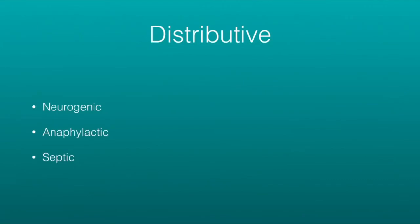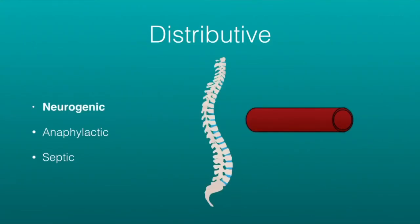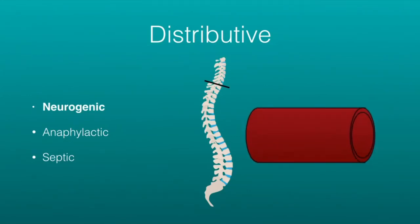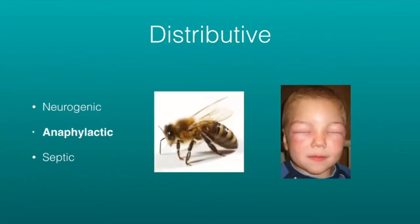With distributive shock, the blood vessels are damaged or not at normal diameter and can't send blood where it needs to go. This can be due to neurogenic, anaphylactic, or septic causes. With neurogenic shock, we have damaged part of the spinal cord. Normally the sympathetic and parasympathetic systems keep a balance and keep your blood vessels at the right diameter. When the spinal cord gets damaged, the blood vessels no longer have sympathetic control, the parasympathetic takes over, and the blood vessel dilates.